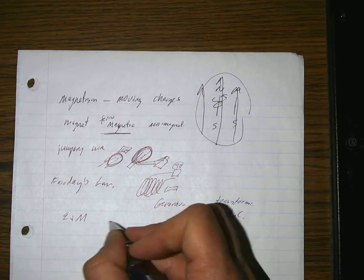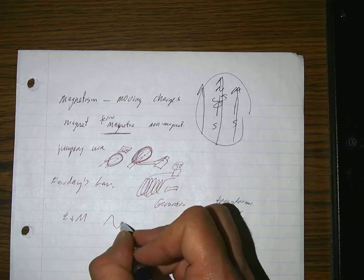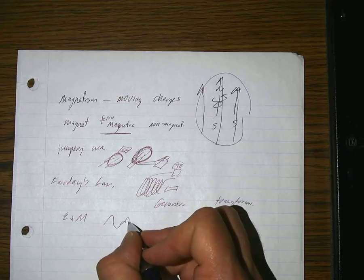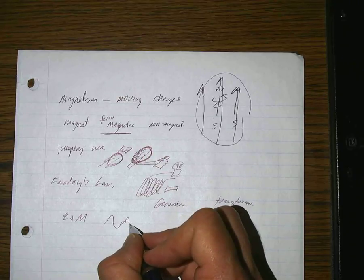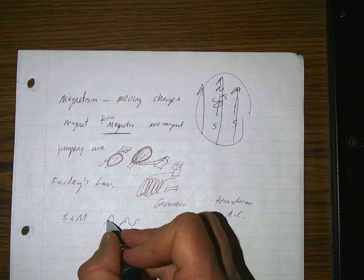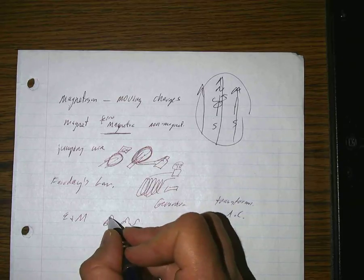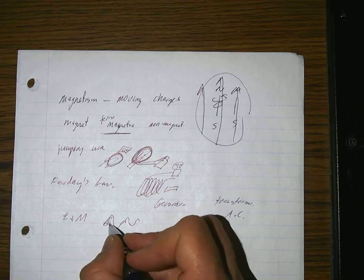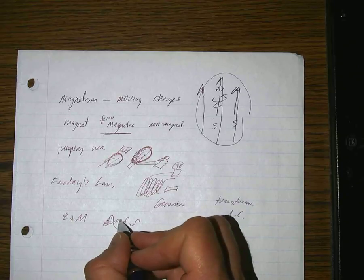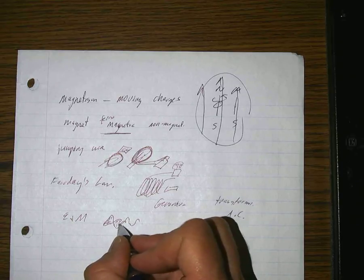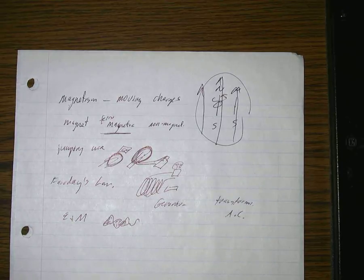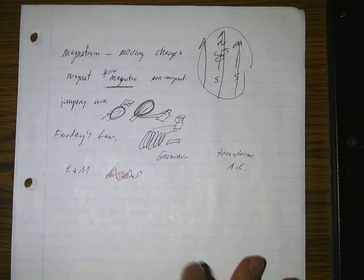We learned electromagnetic waves are regions of electric and magnetic fields that are changing, with the magnetic field coming out of the page and into the page, and the electric field going up and down.